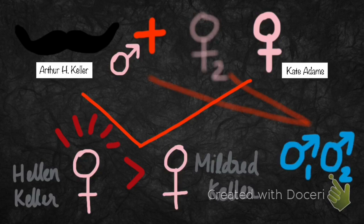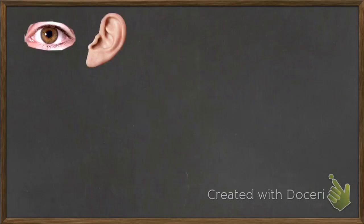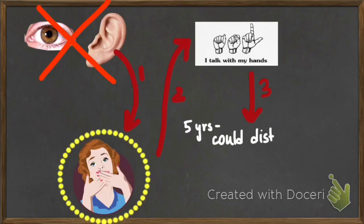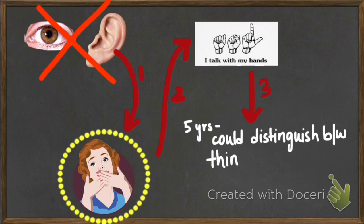Because Helen Keller could not see and could not hear, she could not talk, and so she had to use her hand to communicate. When she was five years old, she could distinguish between things by touch.